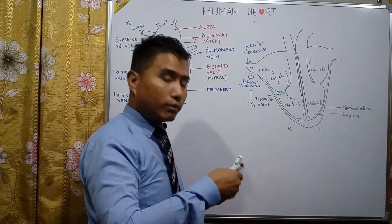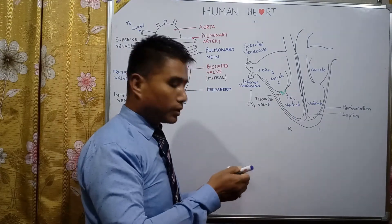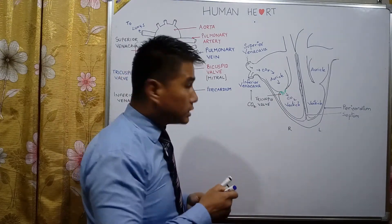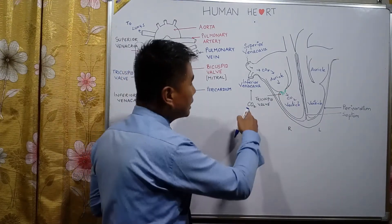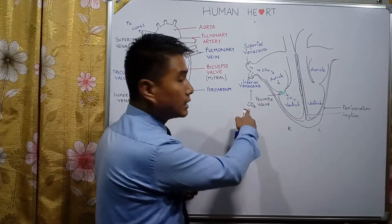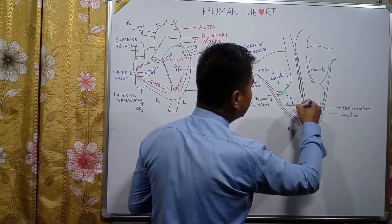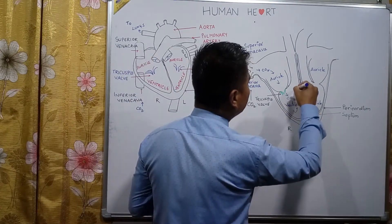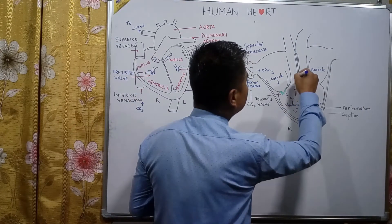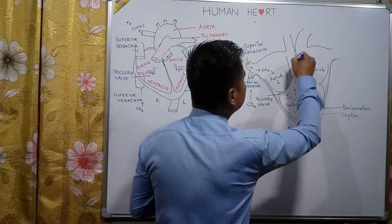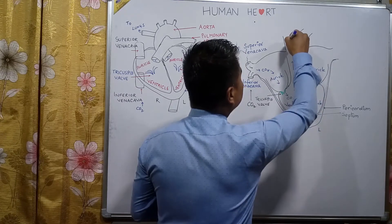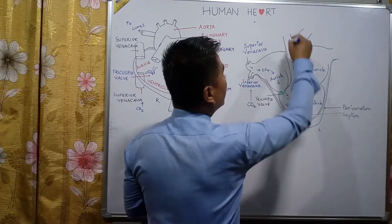As a result, there is only one way for the deoxygenated or carbon dioxide-containing blood to go — and that is out of the heart.